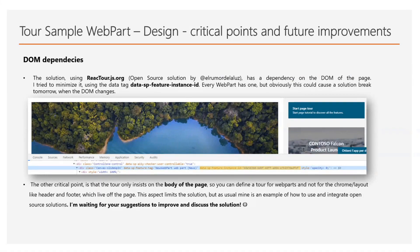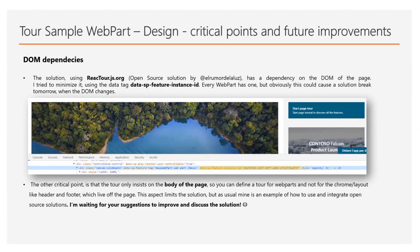A really important aspect of the solution is the DOM dependency — it's a critical point. To minimize it, I used the data tag data-sp-feature-instance-id and took advantage of the fact that every web part has one. But obviously this could cause the solution to break if the DOM is modified in the future. The other critical point is that the tour operates on the body of the page, so you can define a tour for web parts but not for Chrome layout elements like the header and footer. This aspect limits the solution, but mine is a sample — I'm waiting for your suggestions to improve and discuss it.